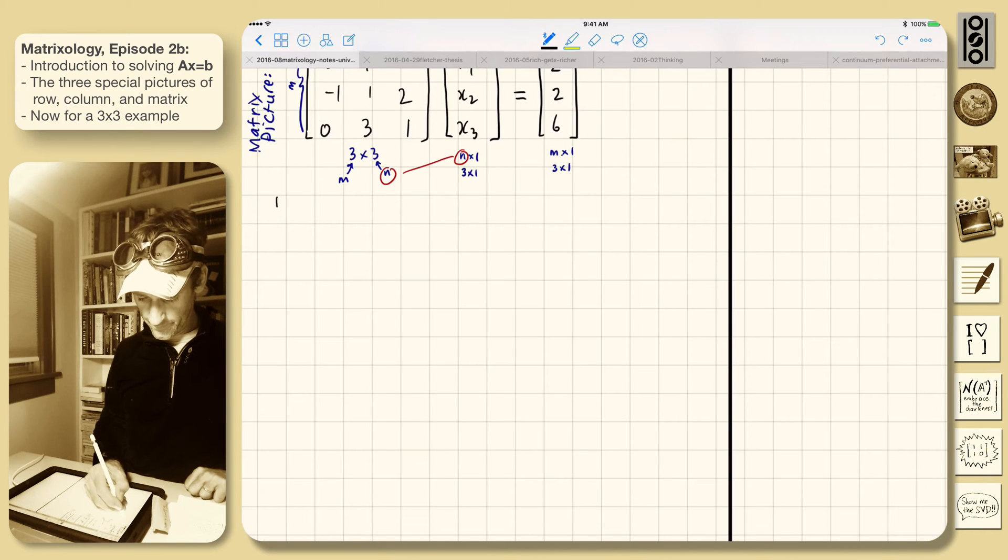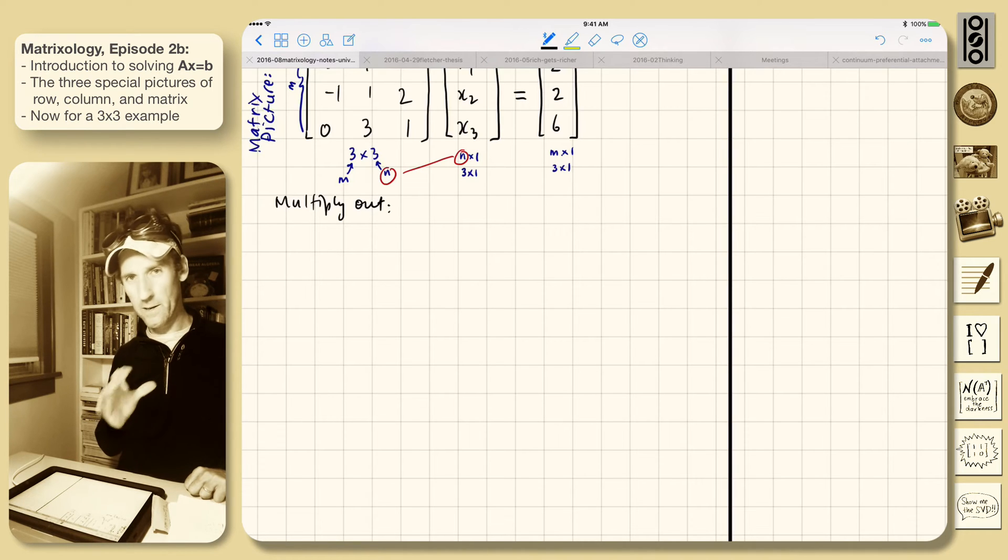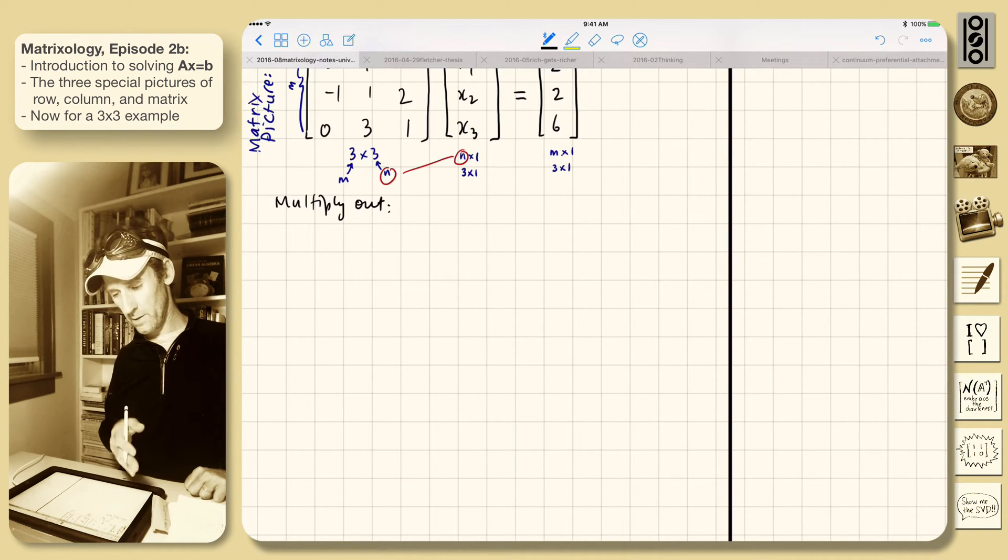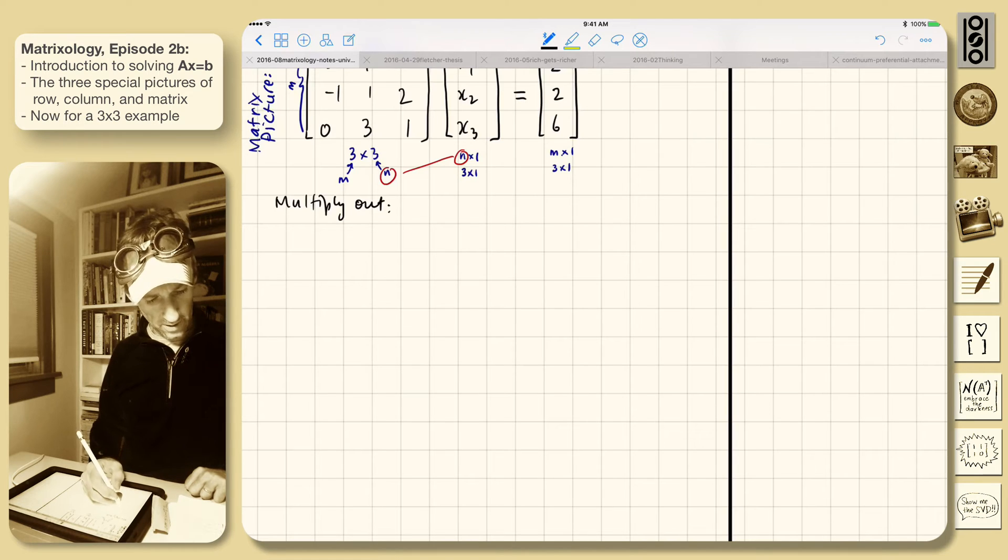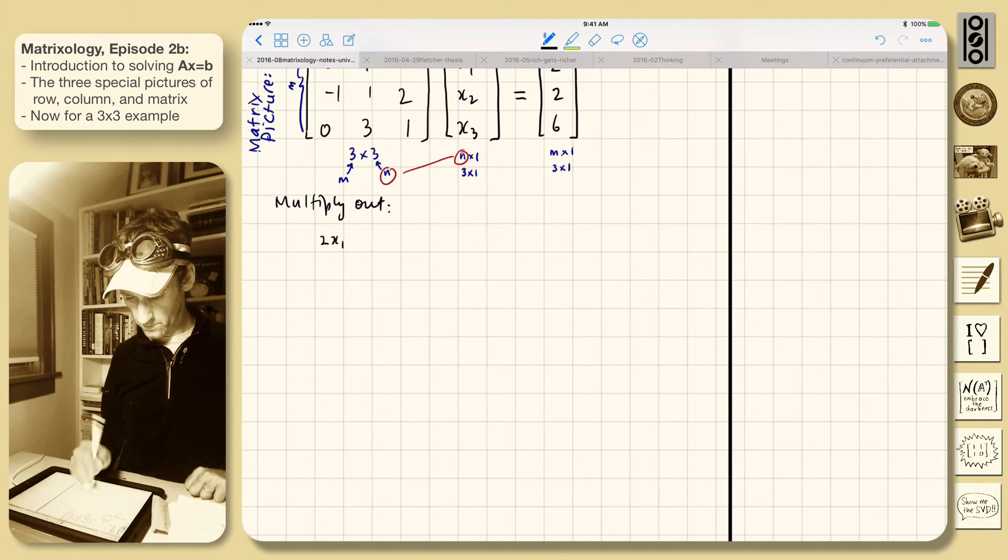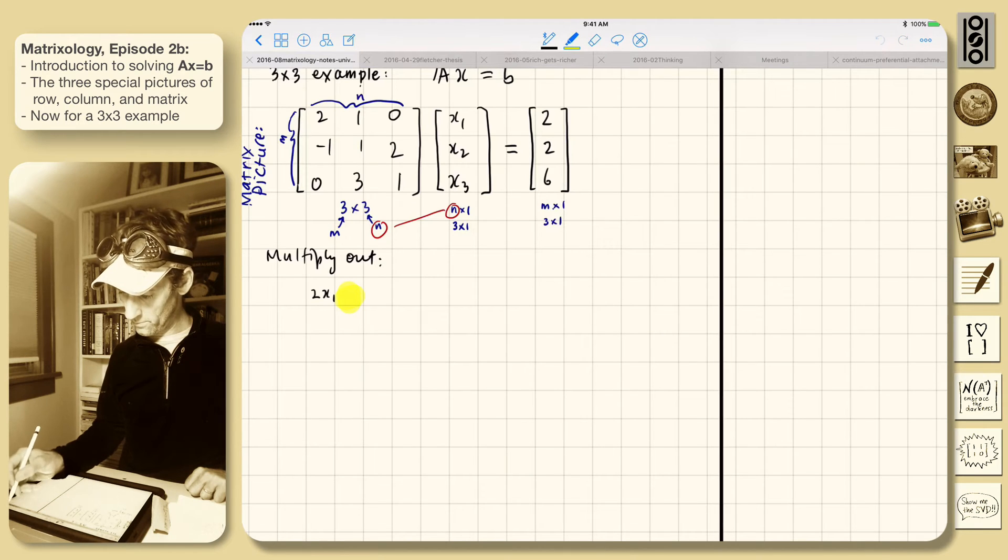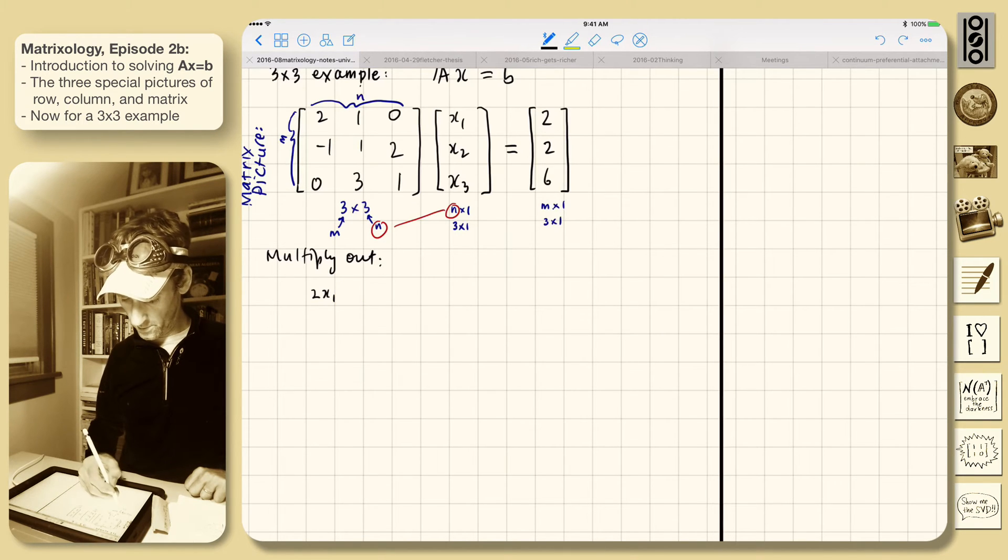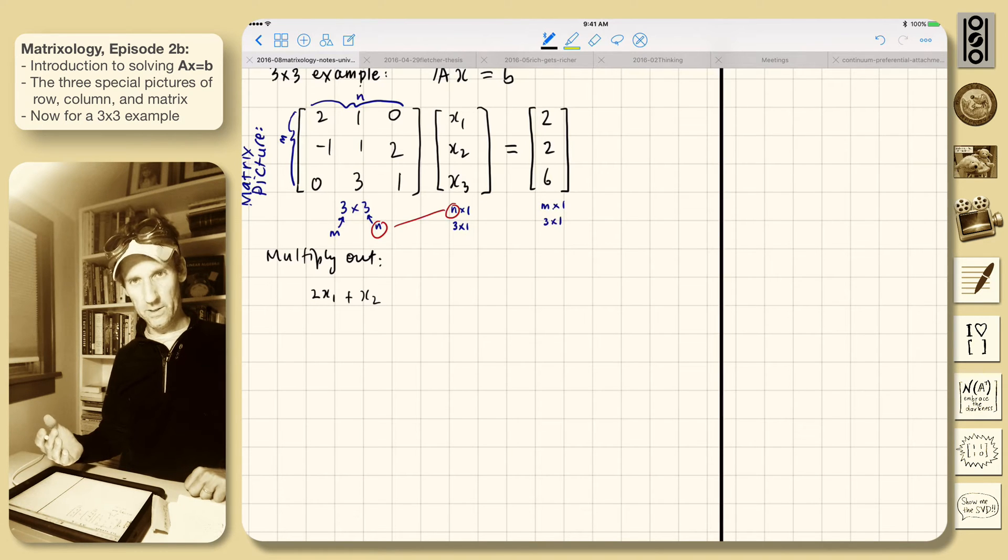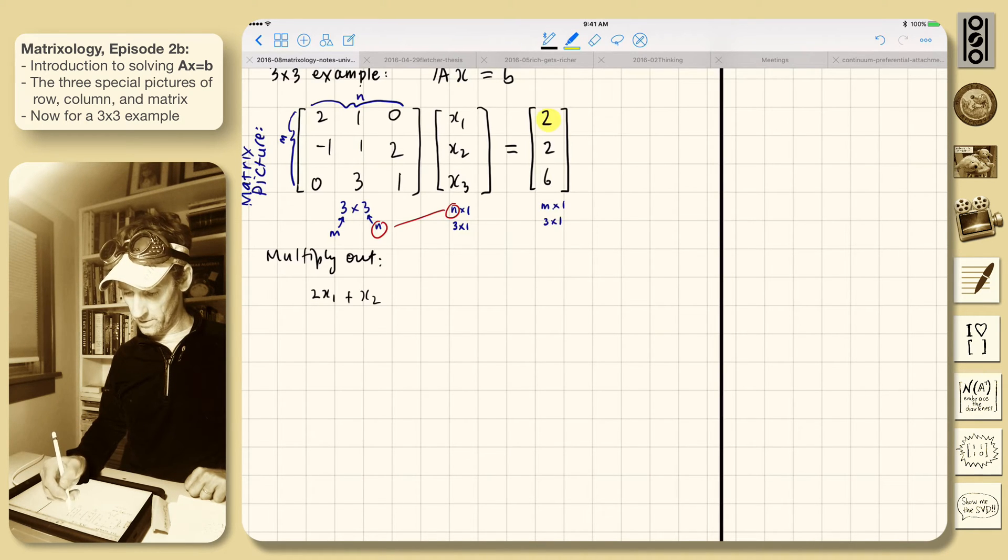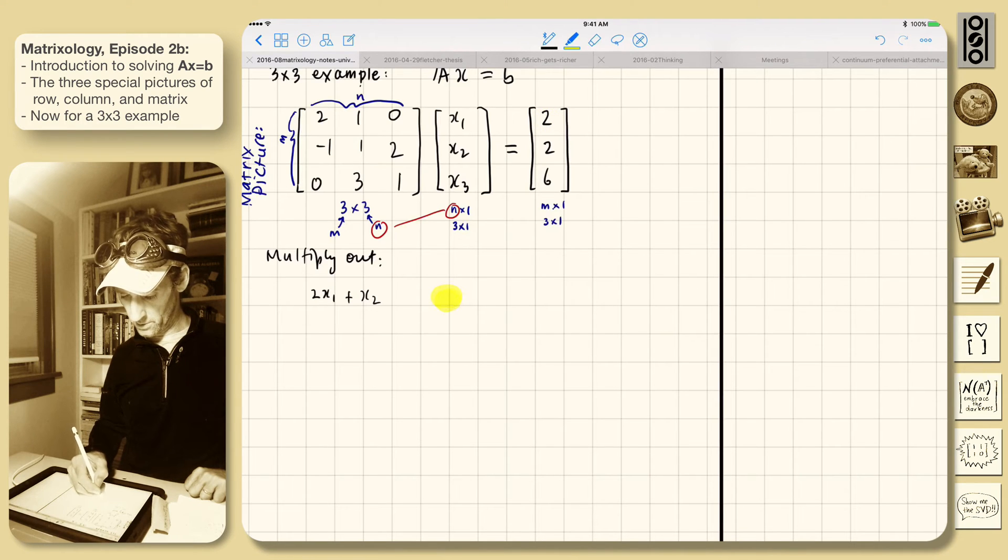All right, so let's do that multiplication. Multiply out in the standard way, right? Row, column, dot products. And so we'll end up with, and I'll space them out. So there's a 2×1, so there's going to be 2 times x1, 1 times x2, 0 times x3. And we're going to add those things together. So it's 2x1 plus x2. And then there's 0x3, and I'm just going to leave a space. And all of that has to equal what's over here on that entry there. So that's equal to 2.